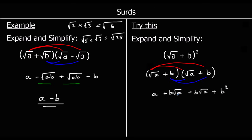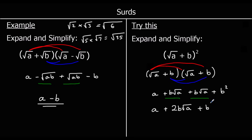So what can we simplify? We've got two B root A terms. I'll leave the A at the front. B root A plus another B root A — one of something plus another one makes two of them. So I've got 2B root A, and I've got B squared as well. So the answer is A plus 2B root A plus B squared. That's as simple as it gets.